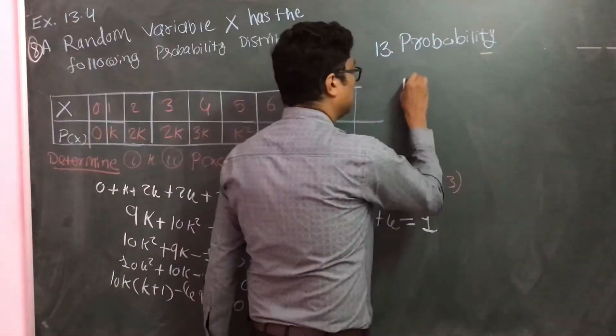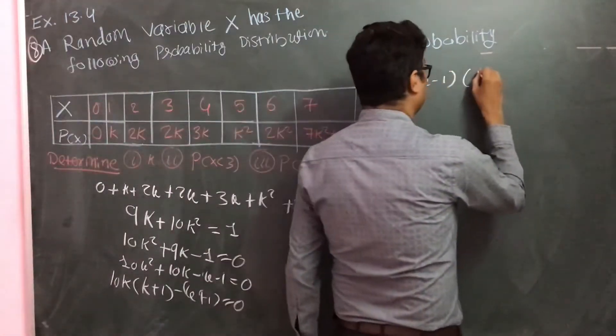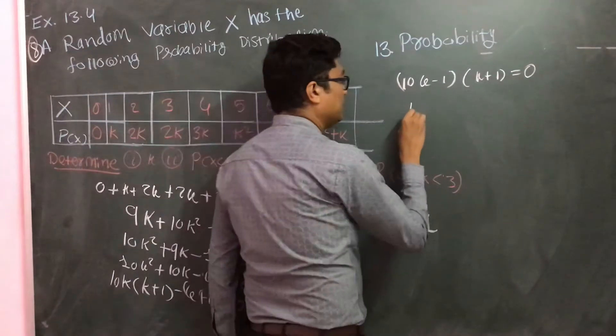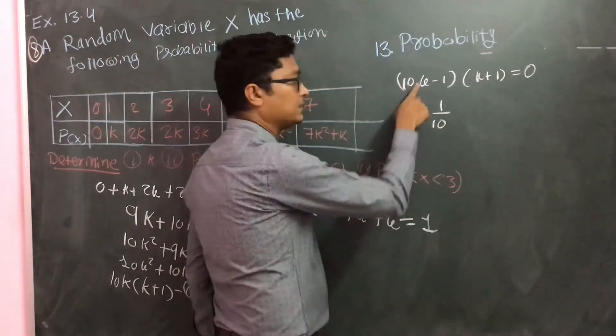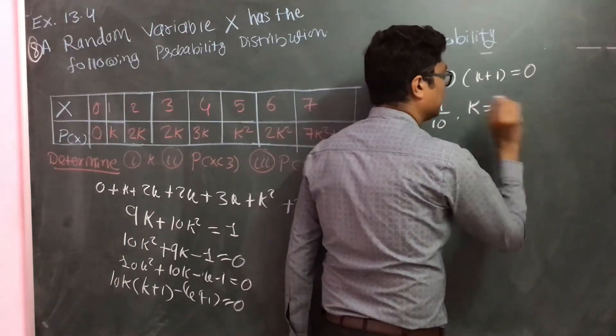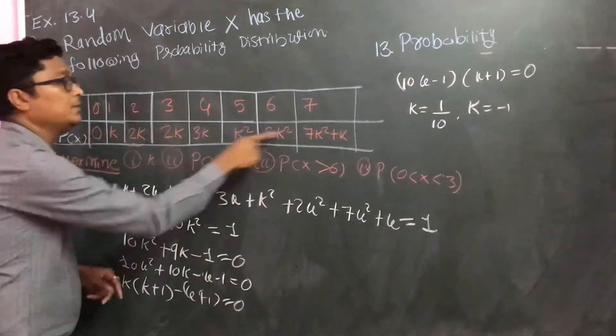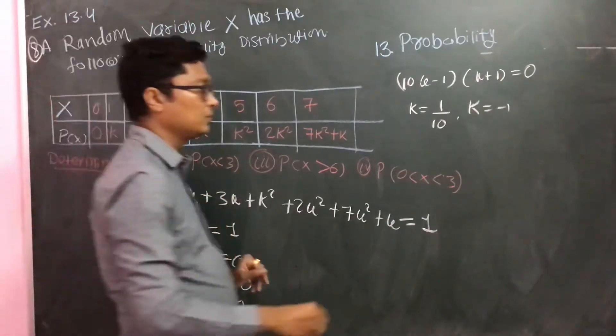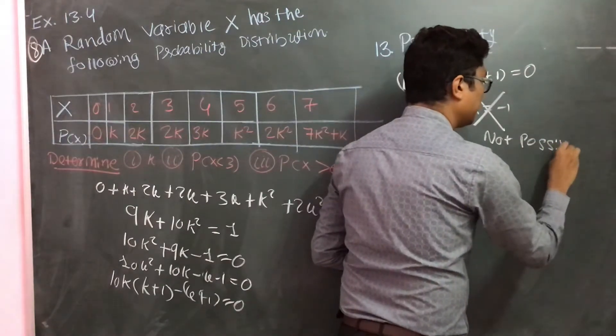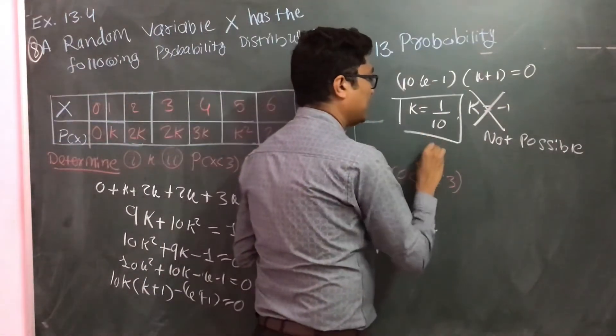When you are going to solve this, what you will get is 10k into k plus 1 minus 1 into k plus 1. So 10k minus 1, k plus 1. So k equals minus 1, that is not possible or invalid. So k equals 1 by 10 is possible. This is our answer.